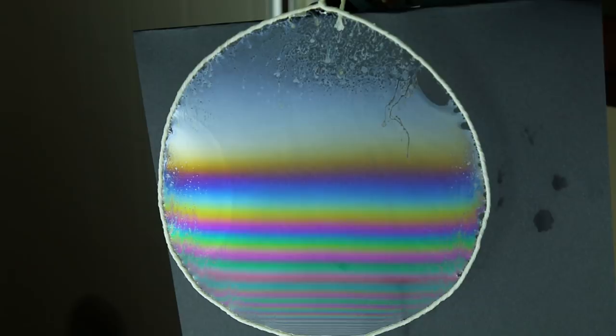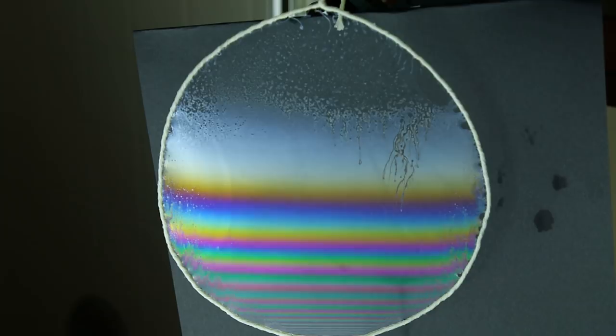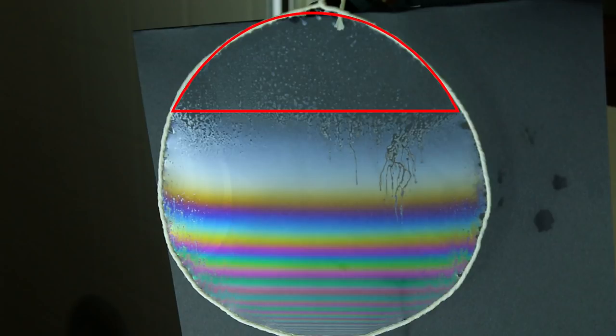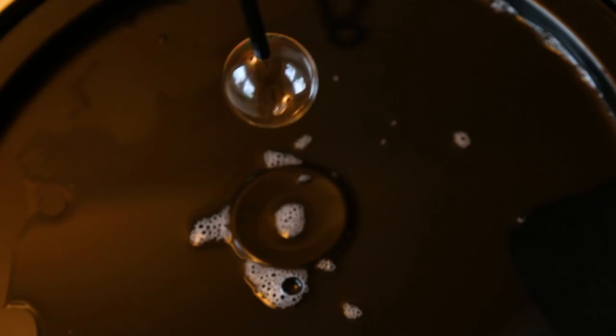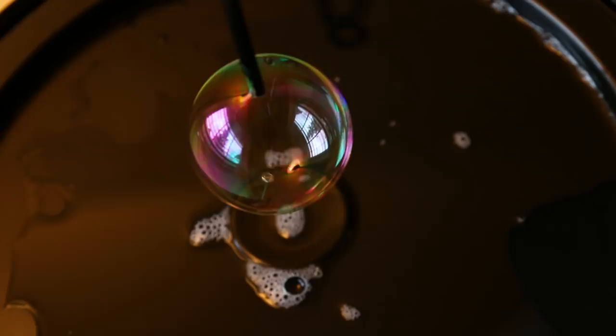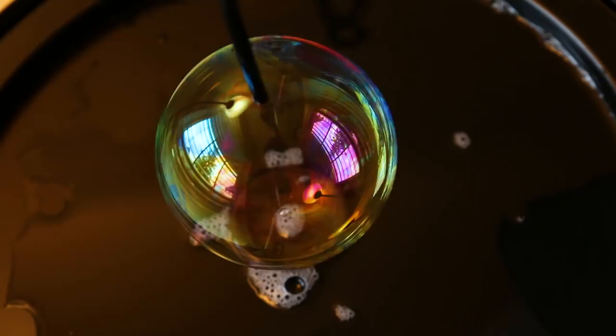But something interesting happens as the film thins even further. In this region, the film reflects no visible light at all. The same is true for the bubbles. As the bubble gets larger and larger, we see that the color is changing because, as we learned, the thickness of the film is getting smaller. Just like the 2D film, it goes from orange to white, and then we see regions where it's completely transparent right before it pops.